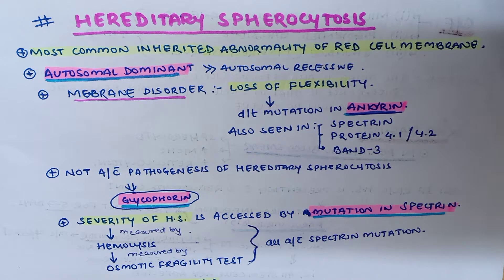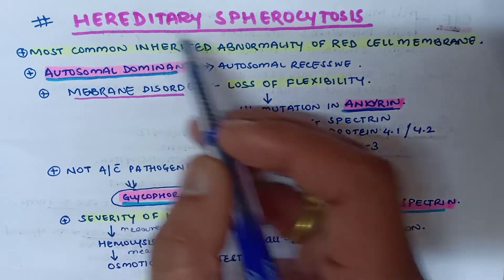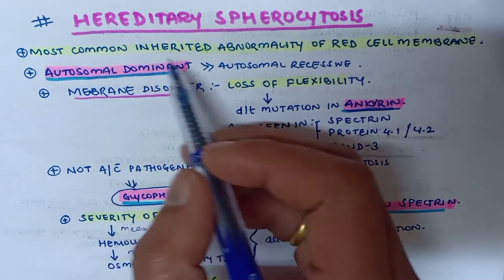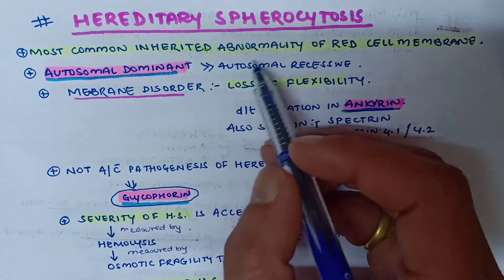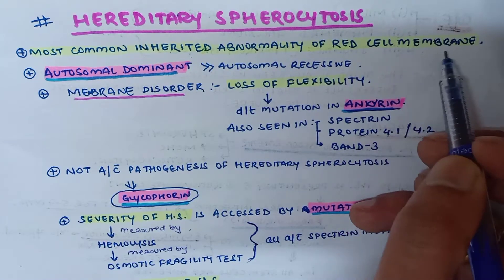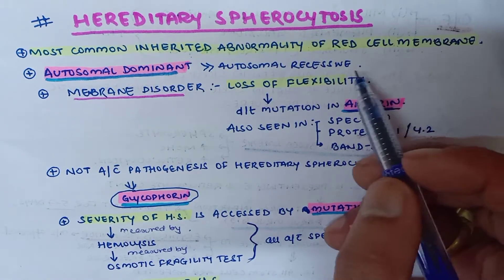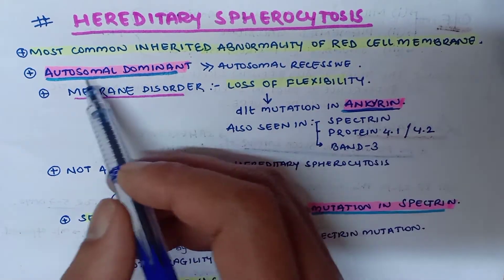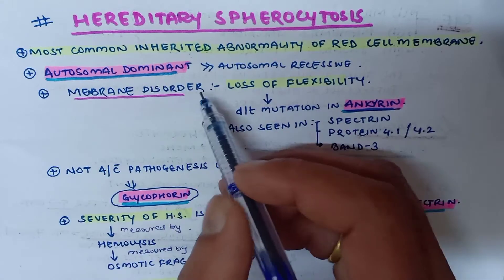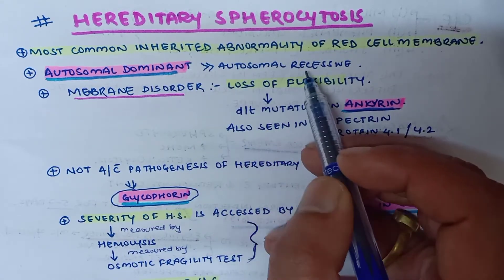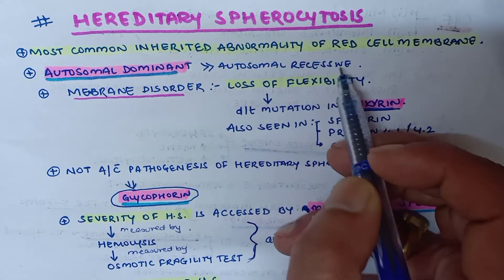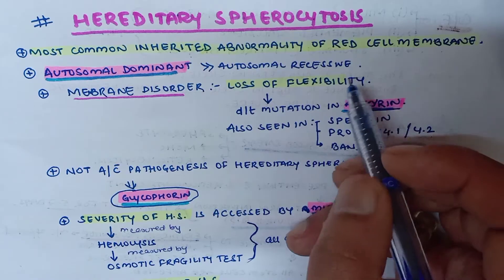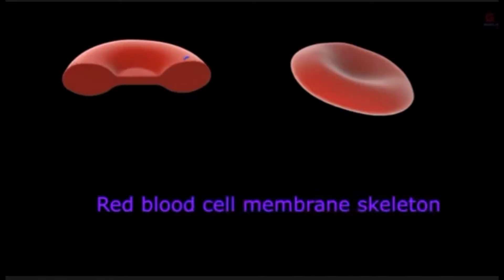Welcome. We are going to discuss hereditary spherocytosis. Hereditary spherocytosis is the most common inherited abnormality of red cell membrane. The mode of inheritance is autosomal dominant, but some cases have also shown autosomal recessive mode of inheritance.